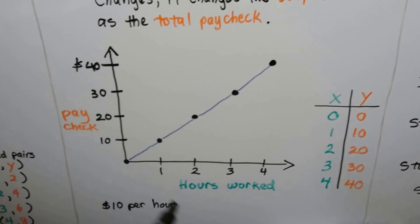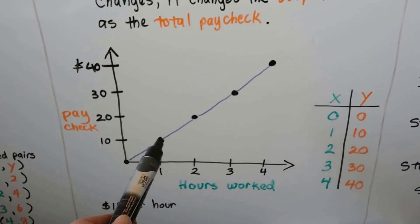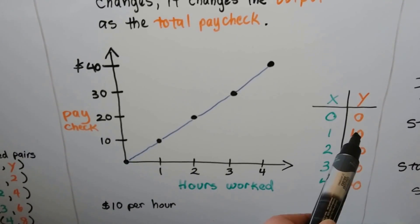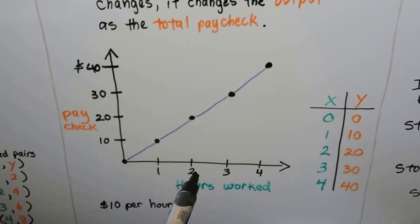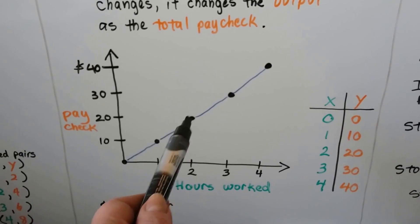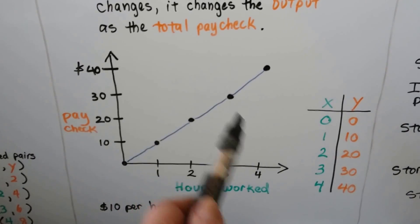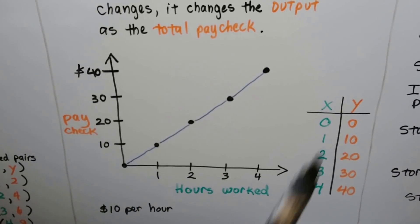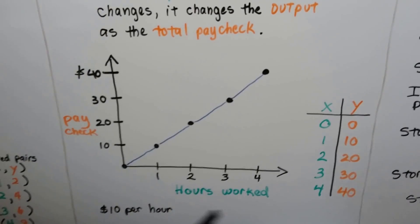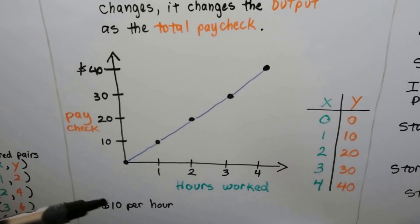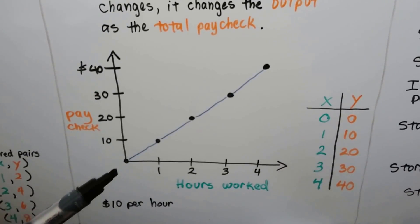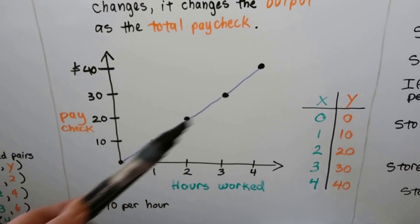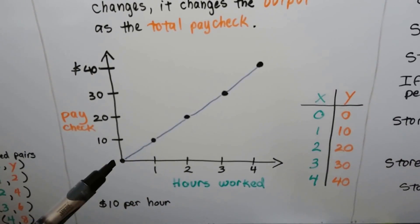If they work 0 hours, they get 0 pay. If they work 1 hour, they make $10. We have 1 for x, 10 for y. If he works 2 hours, he makes 20. 3 hours, he makes 30. We have our function table here showing the x and y values. With this constant $10 per hour, depending on the hours worked, is going to affect the pay. And it's linear.